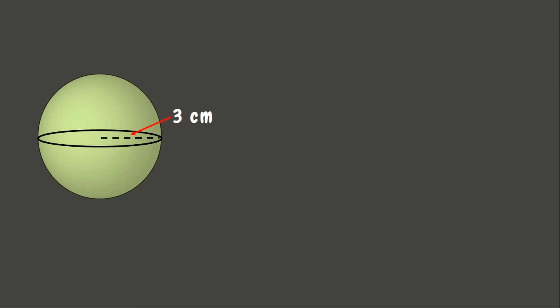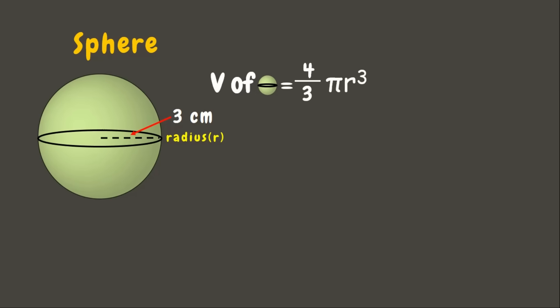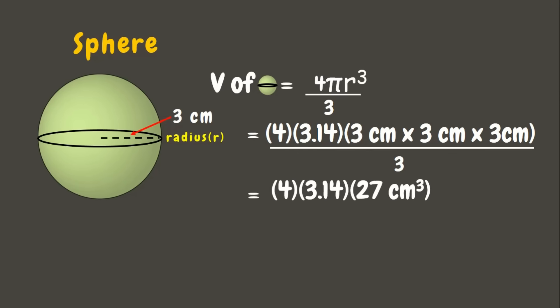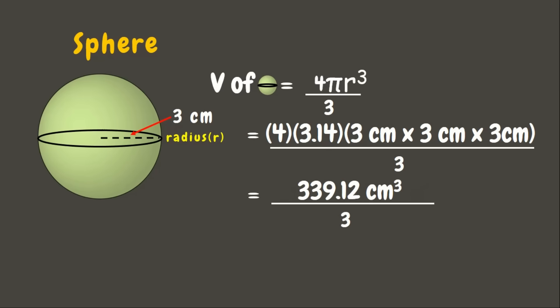For our next example we have a sphere whose radius measures 3 centimeters. The formula for the volume of a sphere is V = (4/3)πr³. Solving: 4 × 3.14 × (3 cm)³ ÷ 3. Three cubed is 27 cubic centimeters. So 4 × 3.14 × 27 = 339.12 cubic centimeters. Divided by 3, the answer is 113.04 cubic centimeters. That's the volume of this sphere.